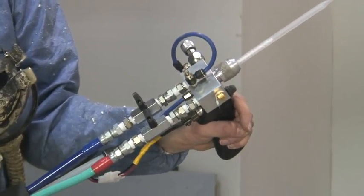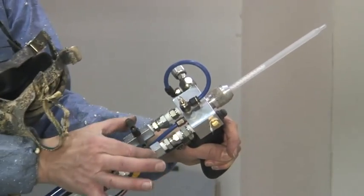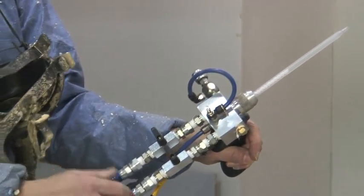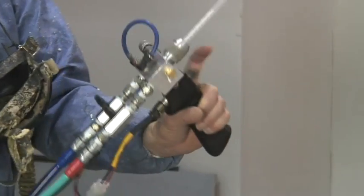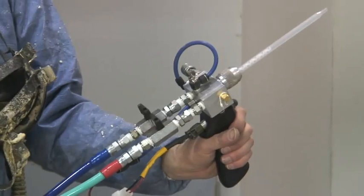Now the gun's ready to go. You've already got your unit activated. You open the valves for the ISO and the resin. Activate the air. Your electric trigger control. Everything on and you're ready to spray, which we're going to do next.